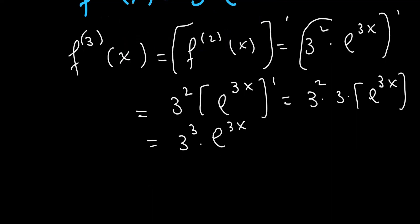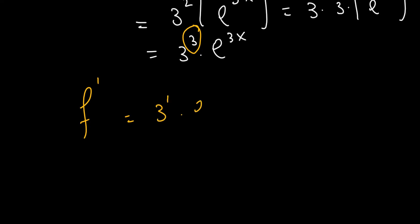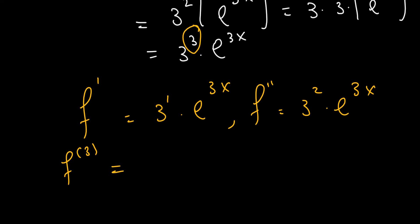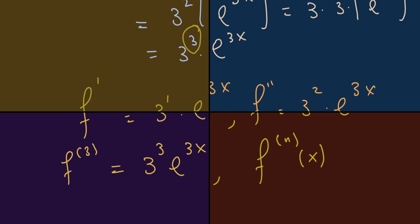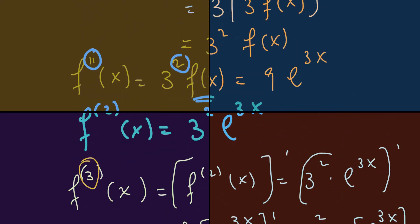Summarizing the pattern: the first derivative is 3^1 · e^(3x), the second derivative is 3^2 · e^(3x), the third derivative is 3^3 · e^(3x), the fourth derivative is 3^4 · e^(3x). Therefore, the nth derivative, when differentiated with respect to x, will be 3^n times the function itself, which is e^(3x). So f^(n)(x) = 3^n · e^(3x). The second derivative is 3² · e^(3x), and the answer is choice D.